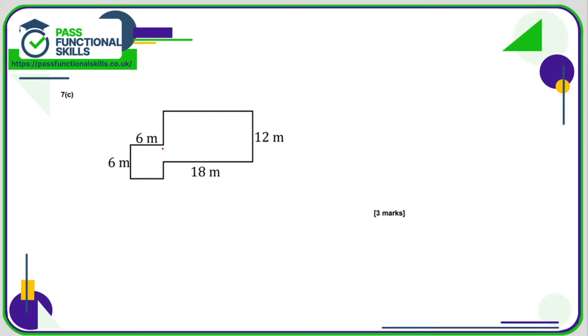C, we've got a nice square here, 6 by 6, so that's 36. And 18 multiplied by 12, which is 216. 216 plus the 36, that's 252 square meters.